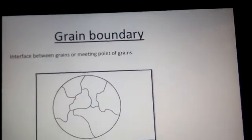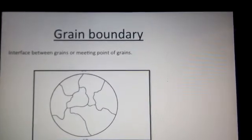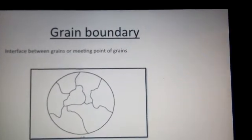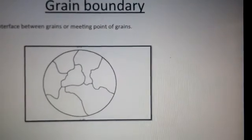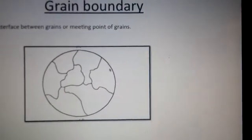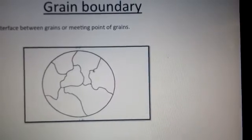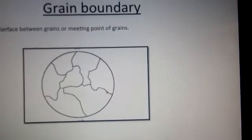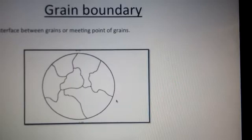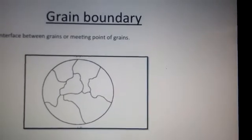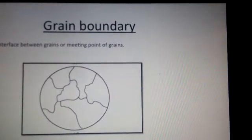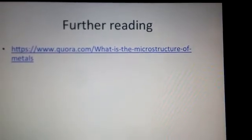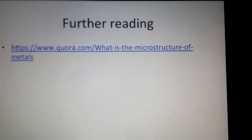Next, grain boundaries. So grain boundary refers to the meeting place or the interface between two or more grains. So here again, the circle refers to the microstructure, and where you have these lines here, that refers to the grain boundary. So it's just the interface between two grains. I'll put these slides in the description box and you can click on that link for further reading.